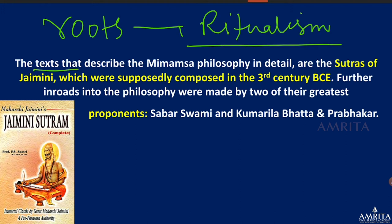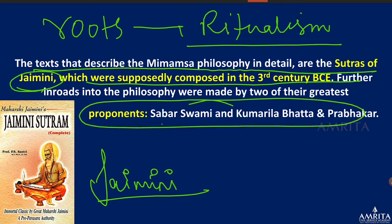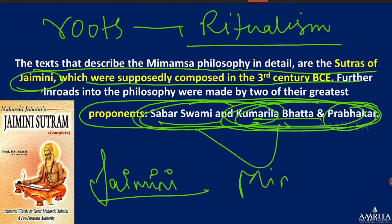The text that describes Mimamsa philosophy in detail is the Sutra of Jaimini, which is why Jaimini is said to be the founder of this philosophical school, supposedly composed in the 3rd century BCE. One of the greatest proponents are Sabarswami, Kumarila Bhatta, and Prabhakara. If a question comes on Prabhakara, Kumarila Bhatta, or Sabarswami, they are all associated with the Mimamsa school.